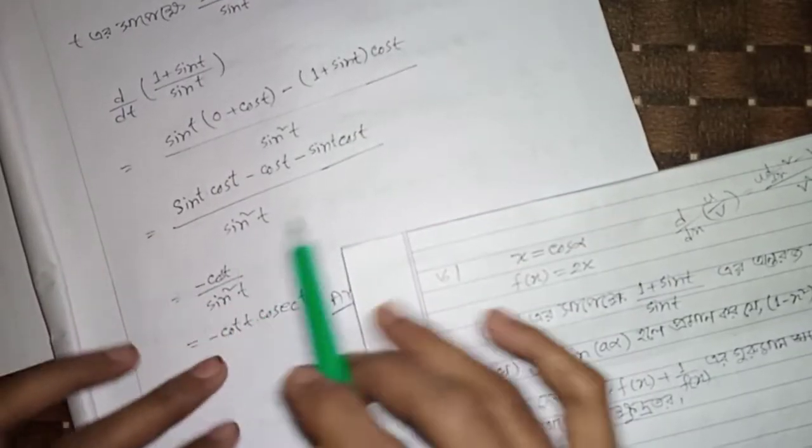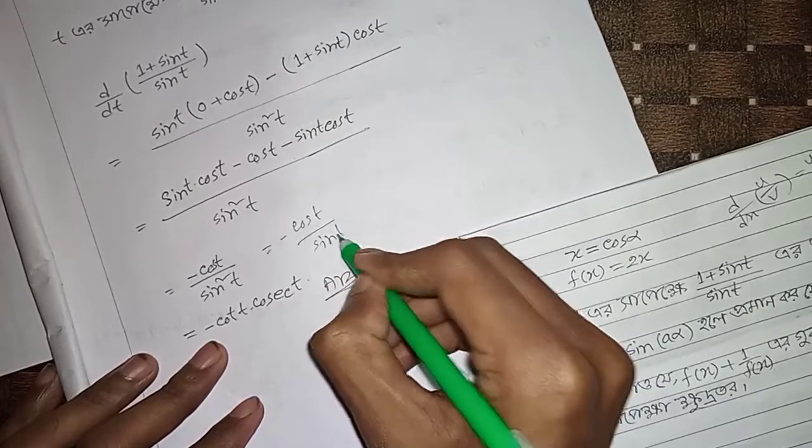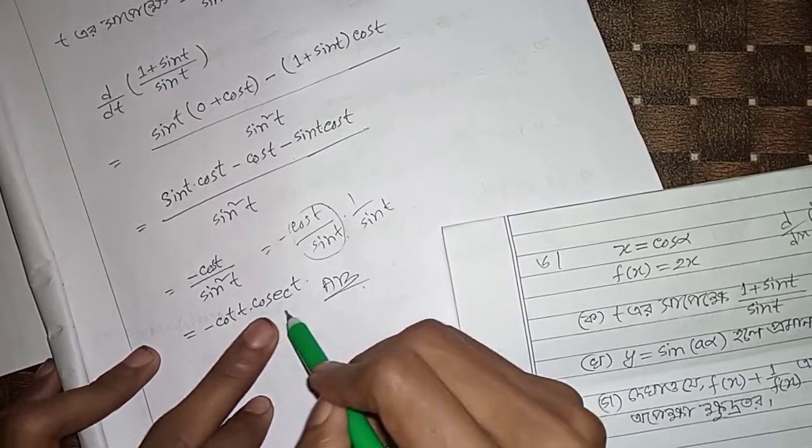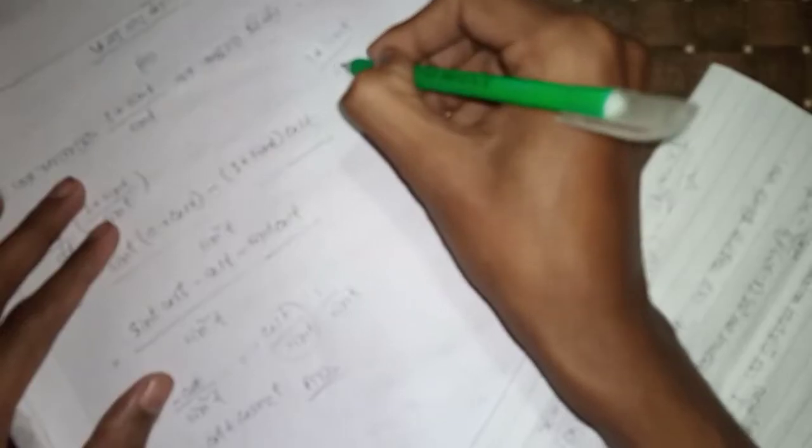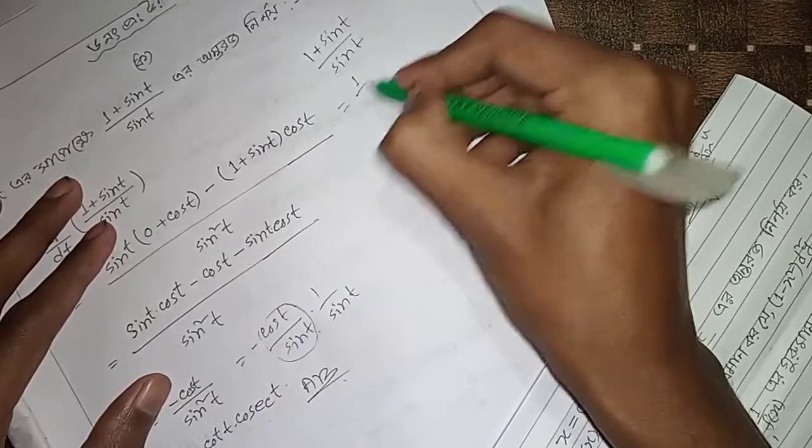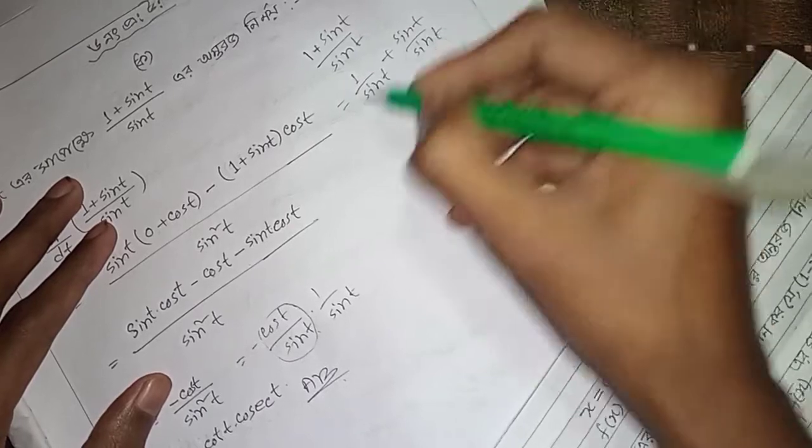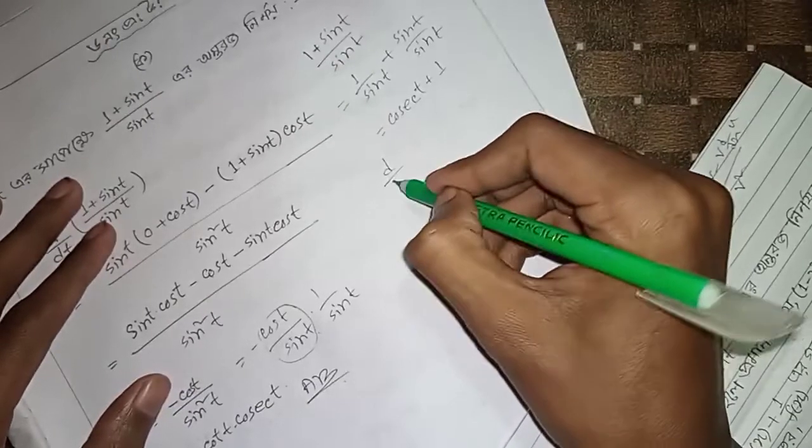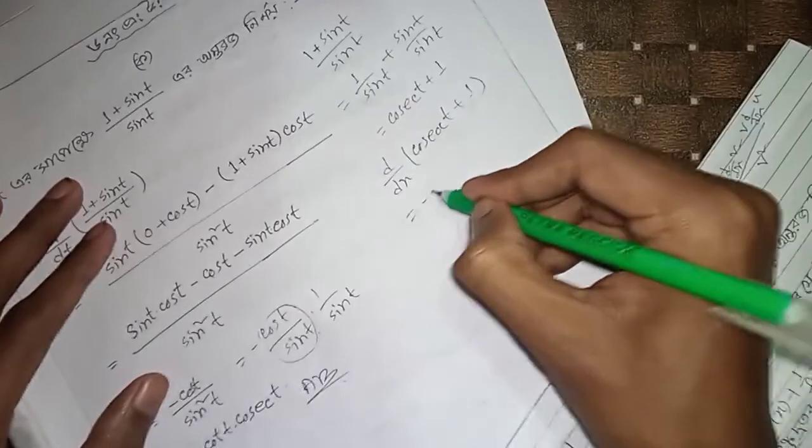Minus cos t by sin²t equals minus cos t by sin t times one by sin t. This simplifies to minus cot t plus csc t, giving us the derivative of csc t plus sec t, which equals minus csc t cot t.